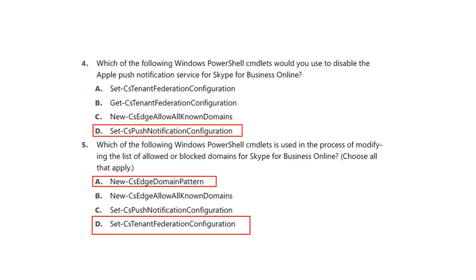Question 4: Which of the following Windows PowerShell cmdlets would you use to disable the Apple push notification service for Skype for Business Online? Question 5: Which of the following Windows PowerShell cmdlets is used in the process of modifying the list of allowed or blocked domains for Skype for Business Online? Choose all that apply. Answers are A: New-CS Edge Domain Pattern, and D: Set-CS Tenant Federation Configuration.